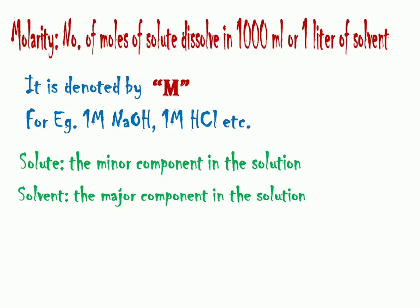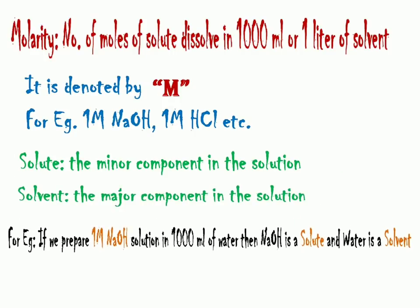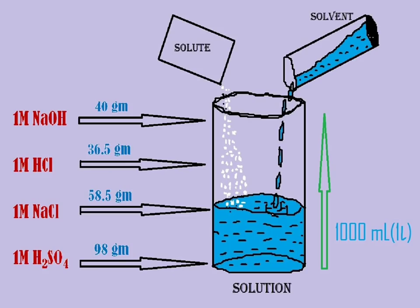For example, if we prepare one molar NaOH solution in thousand ml of water, then NaOH is called solute and water is called solvent. Now here are some examples. If you want to prepare one molar solution...